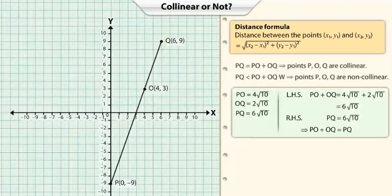Notice that the sum of the distances PO and OQ adds up to 6 times the square root of 10, which is the same as the distance of PQ. Hence, points P, O and Q are collinear.